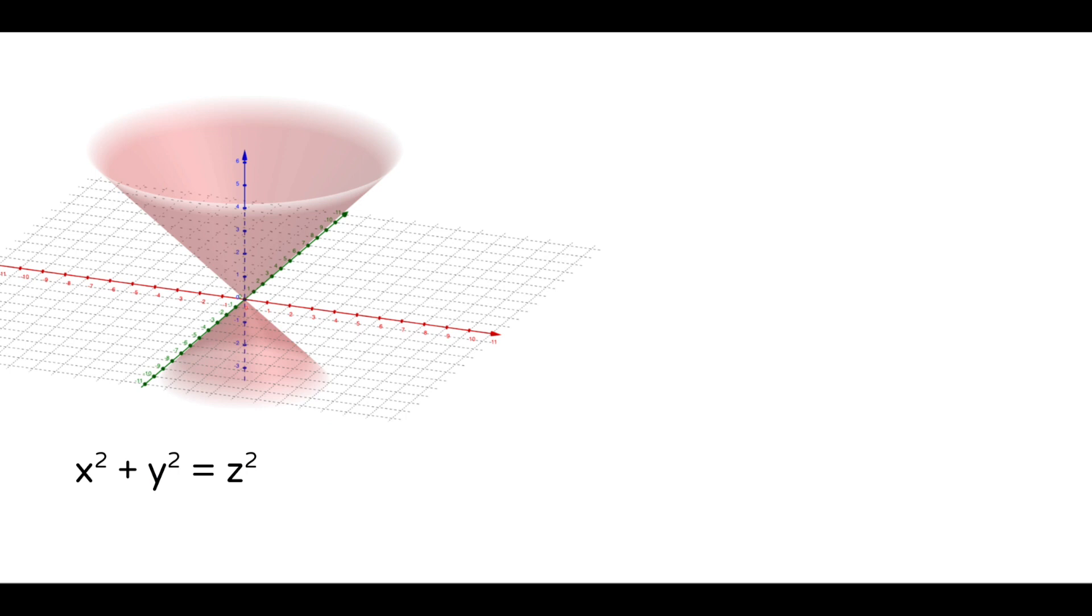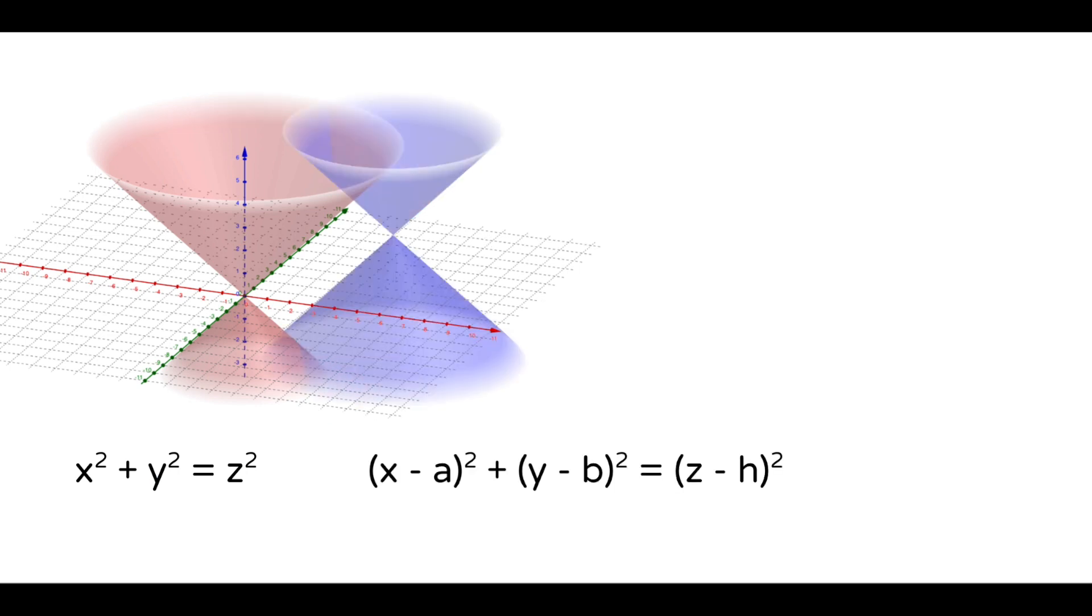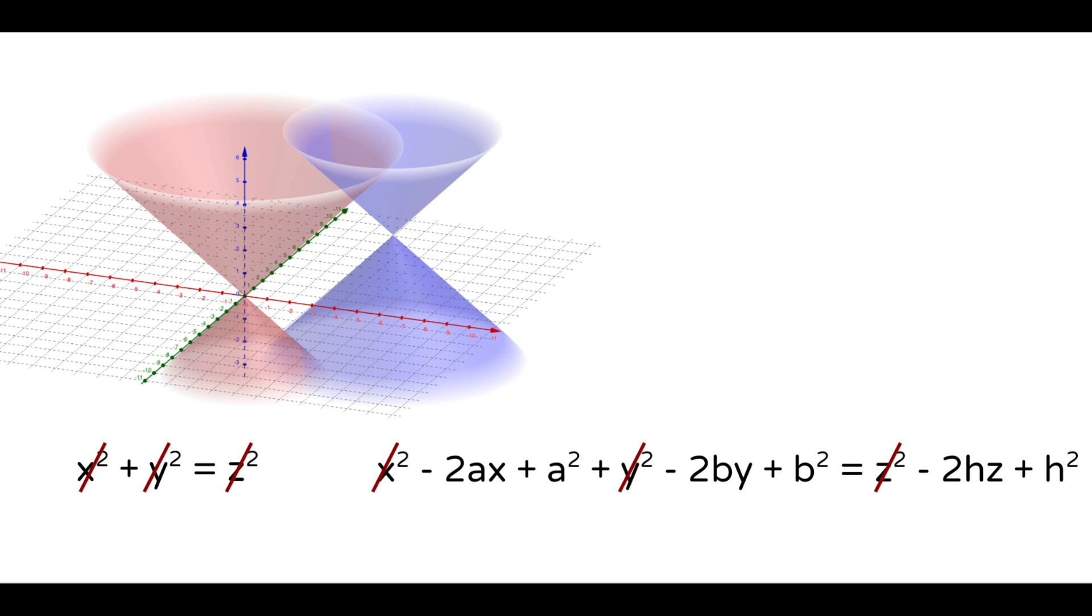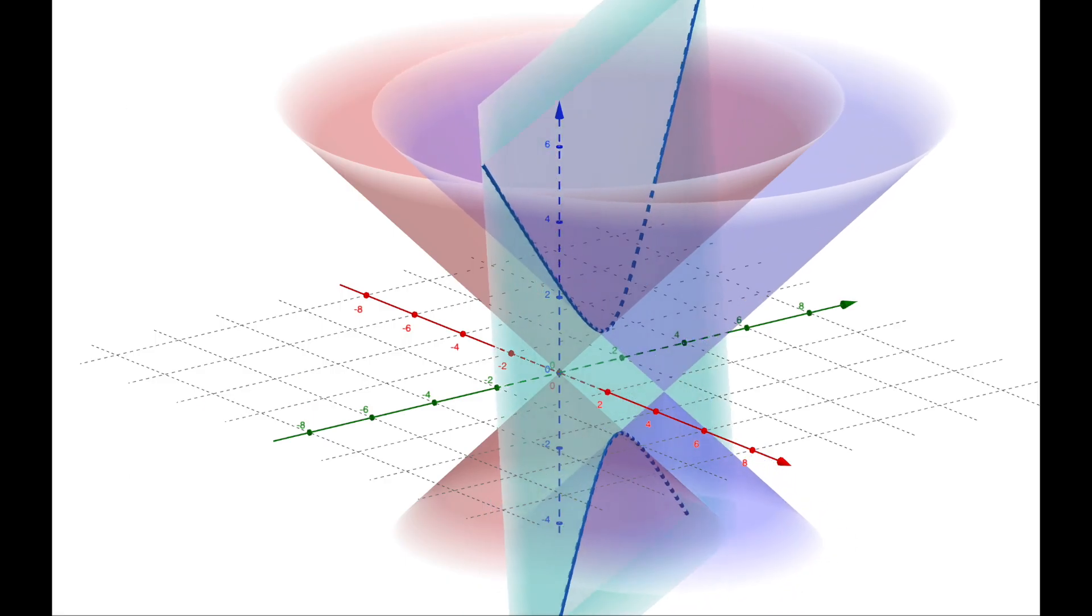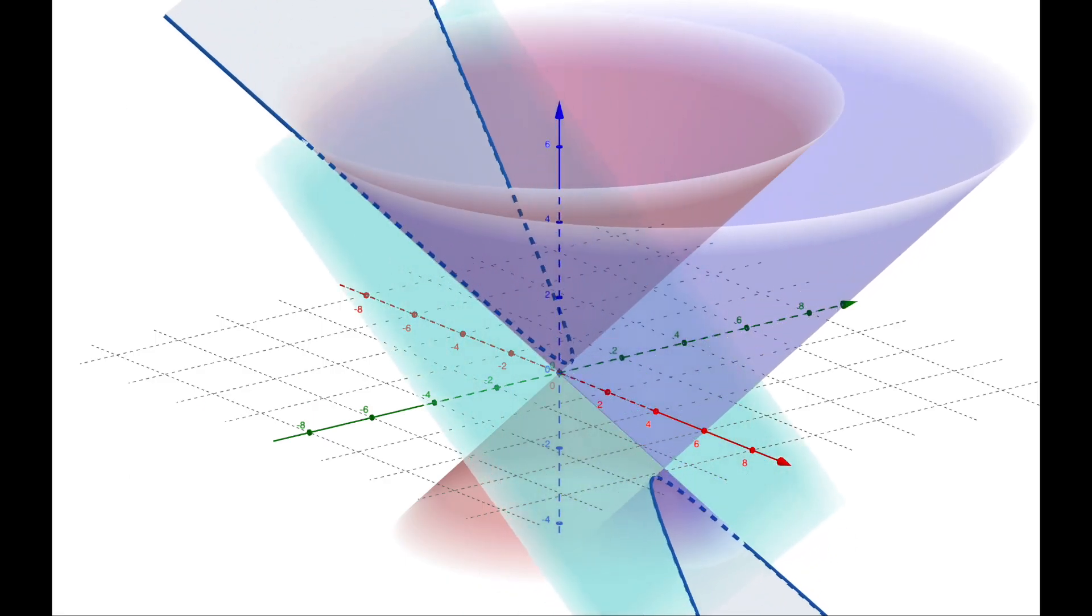With a little algebra, we can see that when we subtract one equation for the cone from the other, the quadratic terms cancel out, which means that these cones intersect along a plane. And we know that a plane intersected with a cone gives a conic section. And that's why conic sections pop up in the solution to this problem.